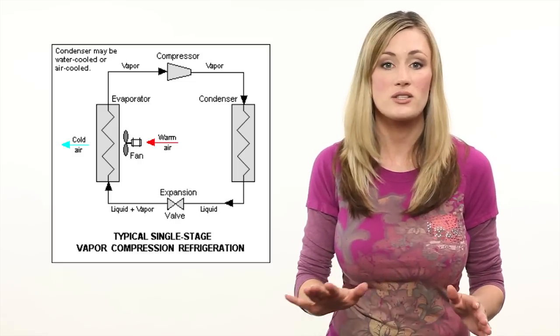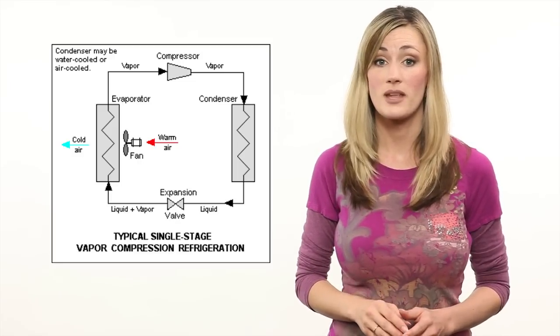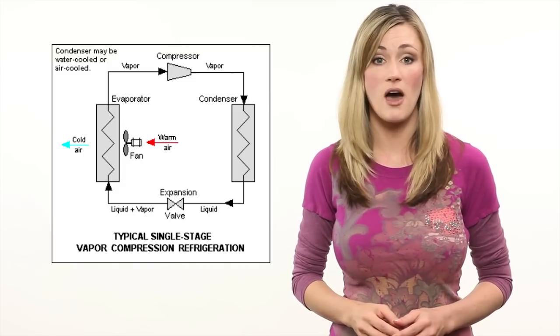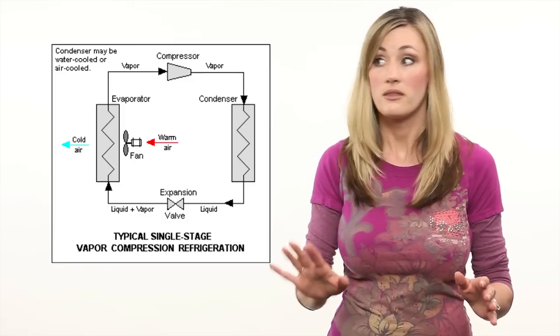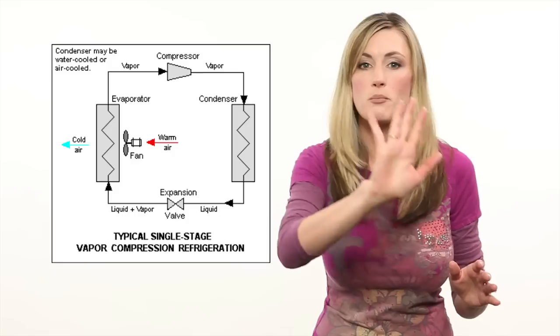It passes through a condenser that removes the heat from the refrigerant causing it to condense into liquid. This condensed liquid refrigerant then travels through an expansion valve where it goes through a sudden pressure drop. This drop in pressure causes the liquid refrigerant to instantly vaporize.